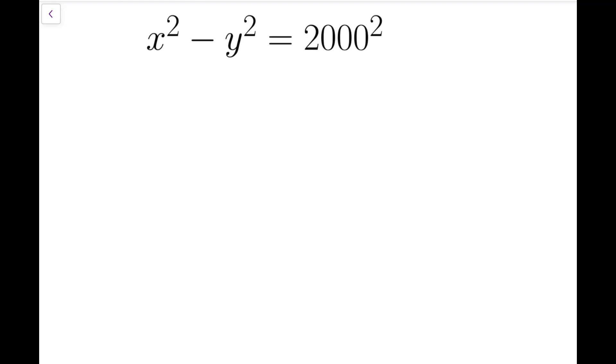The first step to solve this problem is actually very natural, which is to factorize the left hand side, which is x plus y times x minus y, and that equals 2,000 squared, which is actually 4 million.